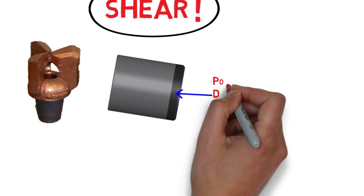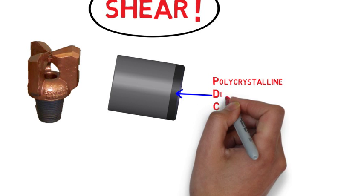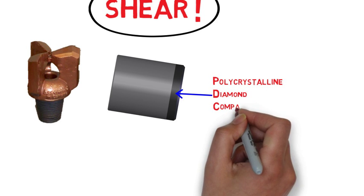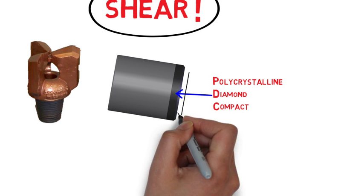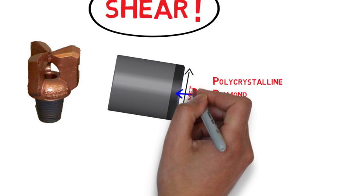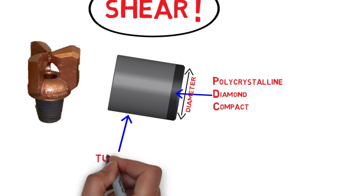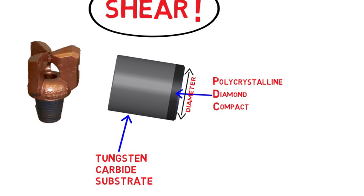The focal point of a PDC bit is the polycrystalline diamond cutters, which is where it gets its name. The cutters are usually cylinders with a man-made black diamond cutting face engineered to withstand the extreme abrasion, impact, and heat that comes from drilling through rock.